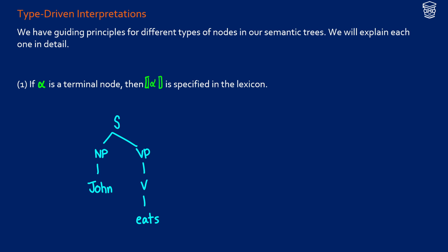So the first rule says that if alpha is a terminal node then the meaning of alpha is specified in the lexicon. What we mean by terminal nodes are things at the very bottom of the trees. This means that the meanings of words like John and eats are going to be specified in the lexicon. In other words, we're going to be able to figure out what those are, but everything else in the tree is going to have a different set of rules like the noun phrase, the verb phrase, the verb in the sentence. We'll need something else to deal with those.